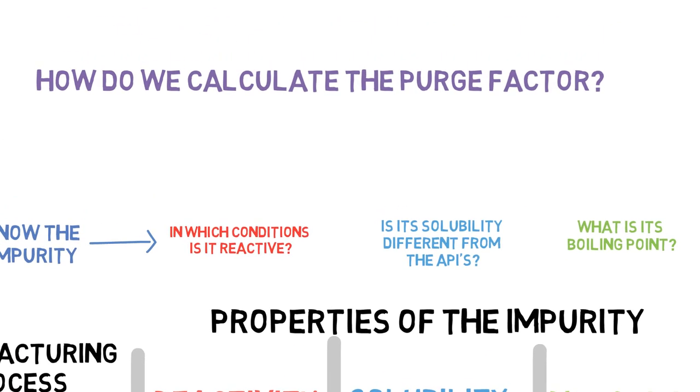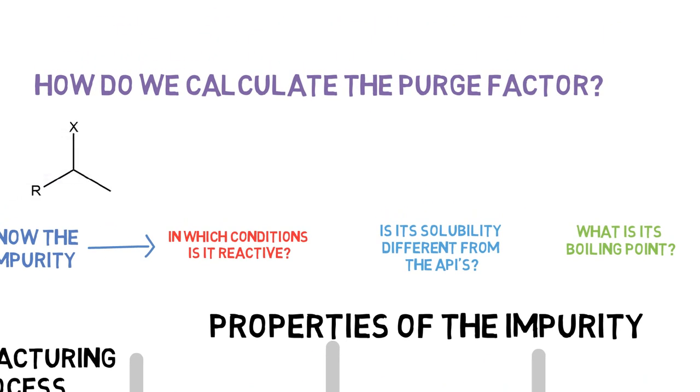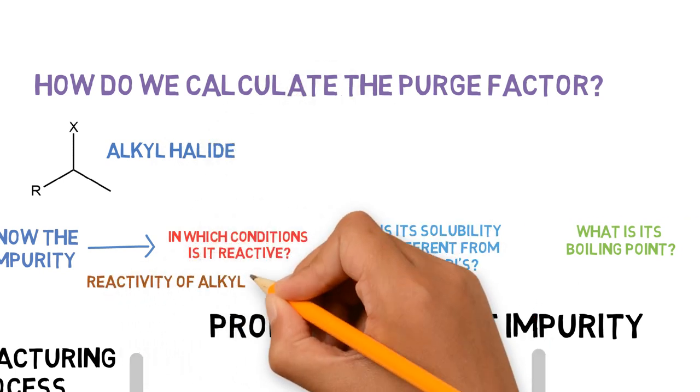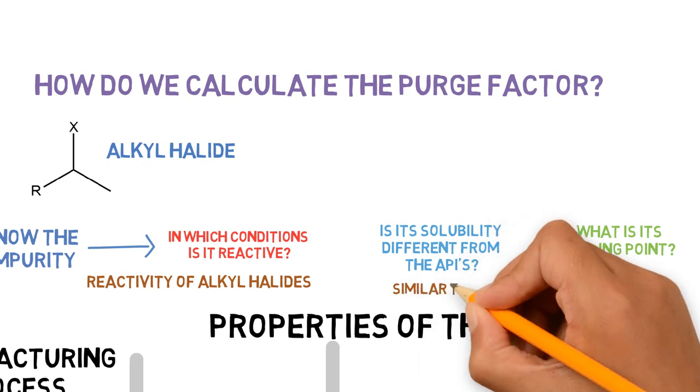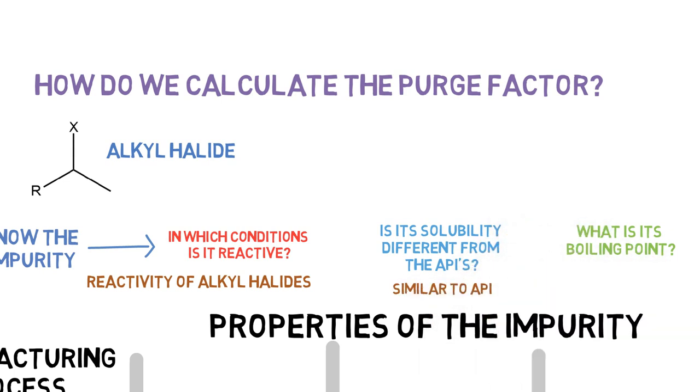Let's say that the mutagenic impurity is an alkyl halide, and it has the following properties. For reactivity, we should consider conditions when alkyl halides are reactive. Its solubility in this case will be similar to the API's, and its boiling point is 80 degrees.